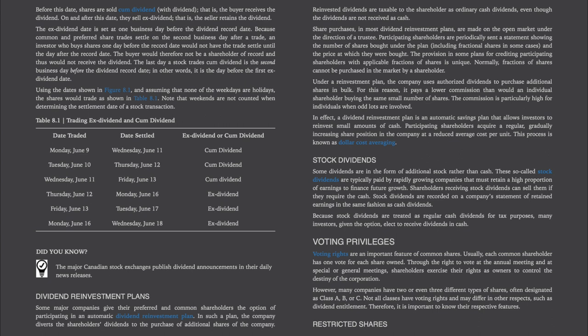Some dividends are in the form of additional stock rather than cash. These stock dividends are typically paid by rapidly growing companies that must retain a high proportion of earnings to finance future growth. Shareholders receiving stock dividends can sell them if they require cash. Because stock dividends are treated as regular cash dividends for tax purposes, many investors, given the option, elect to receive dividends in cash.